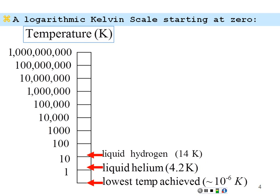Liquid hydrogen: hydrogen solidifies at 14 degrees Kelvin, and becomes liquid as you warm up from 14 degrees Kelvin. Liquid nitrogen is established at 77 degrees Kelvin — still pretty cold, but relatively warm compared to absolute zero. High temperature superconductors transition just above 77 degrees Kelvin, so you can use liquid nitrogen, which is very easy to use, with your high temperature superconductors in that range.